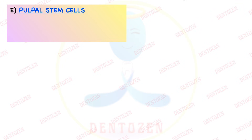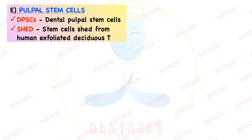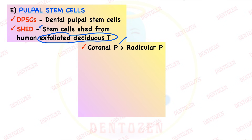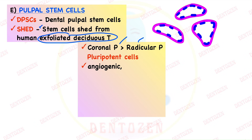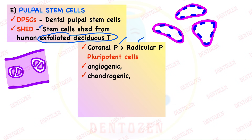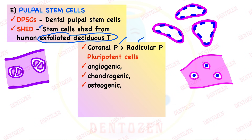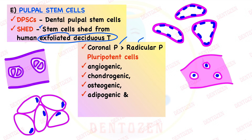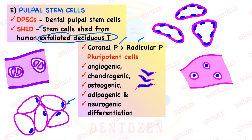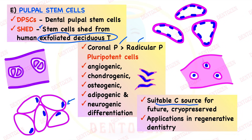Pulpal stem cells are of two types: dental pulpal stem cells, or stem cells from exfoliated deciduous teeth (SHED). They are more numerous in coronal pulp than radicular pulp. They are pluripotent cells — they can become angiogenic (blood vessels), chondrogenic (cartilage), osteogenic (bone), adipogenic (adipocytes), and neurogenic (nerves). They are a suitable cell source for the future, can be cryopreserved, and have applications in regenerative dentistry.